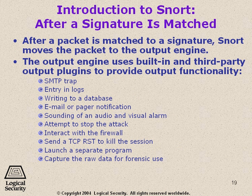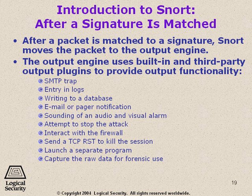After a packet is matched to a signature, Snort moves the packet to the output engine — that's the entire content of the packet. What we do with it is completely up to the output engine. There are many built-in options and many third-party products that have built their own Snort plugins for output functionality. For instance, you could send the packet header, a few bytes, or just the timestamp to an SMTP trap, enter it into logs, write it to an SQL database — which is popular for its high performance — email or pager alerts, set off a sound alarm, or send a TCP reset to kill the offending packet stream.